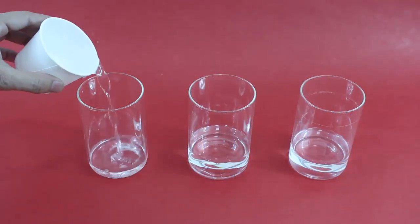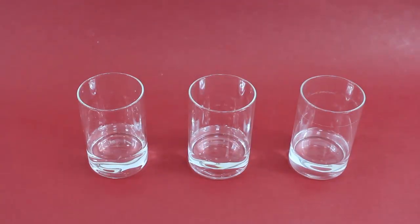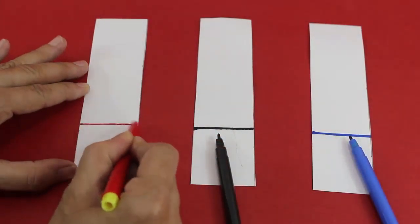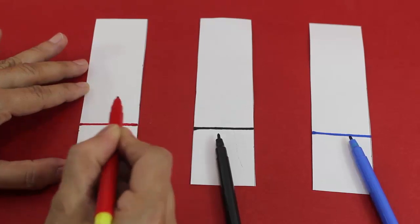Pour some water into the glasses up to about 2 cm from the bottom. Draw lines with red, black, and blue sketch pen on filter paper strips at 3 cm from the end.